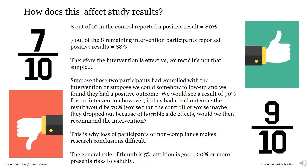Let's look at an example. 8 out of 10 people in the control group reported a positive outcome, giving us a result of 80%. 7 out of the 8 remaining in the intervention group reported a positive outcome, giving us a result of 88%. Therefore, we can conclude the intervention is more effective — correct? It's not that black and white.